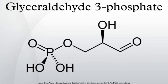In tryptophan biosynthesis, glyceraldehyde 3-phosphate occurs as a byproduct in the biosynthesis pathway of tryptophan, an essential amino acid that cannot be produced by the human body. In thiamine biosynthesis, glyceraldehyde 3-phosphate occurs as a reactant in the biosynthesis pathway of thiamine, another substance that cannot be produced by the human body.